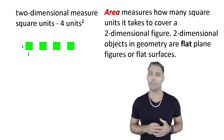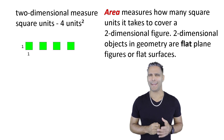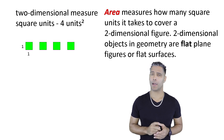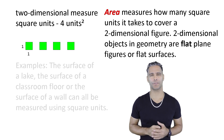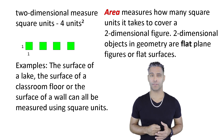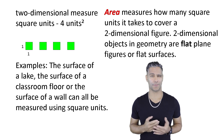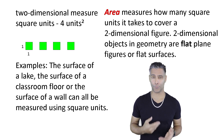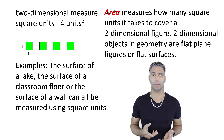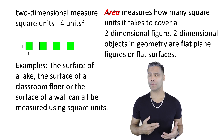Area is an example of a two-dimensional measure. Area measures how many square units it takes to cover the flat plane of a surface. Some examples of things that can be measured with this two-dimensional measure are things like the surface of a lake, the surface of a classroom floor, or maybe even the surface of a wall.